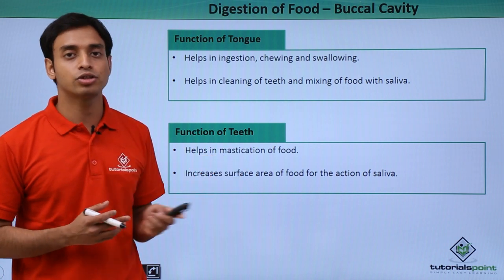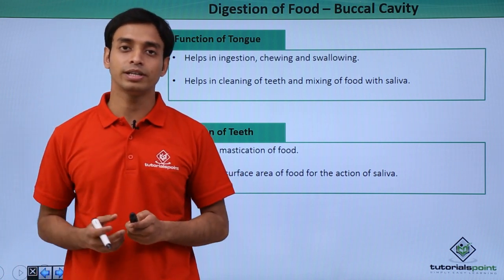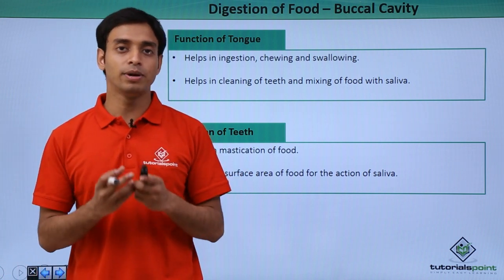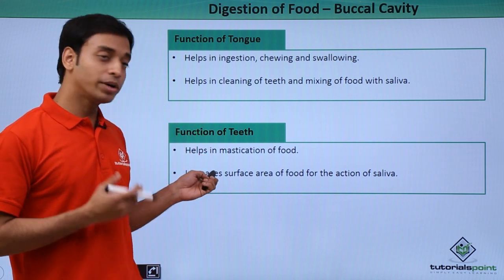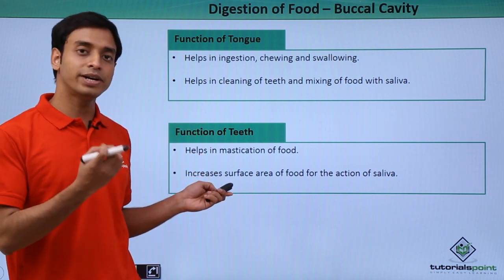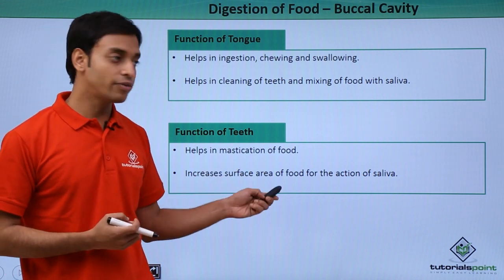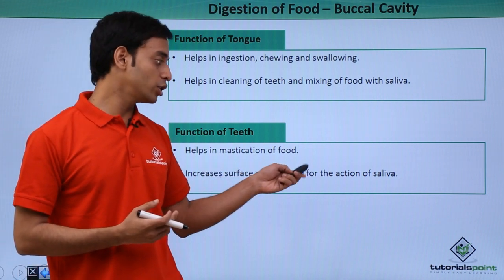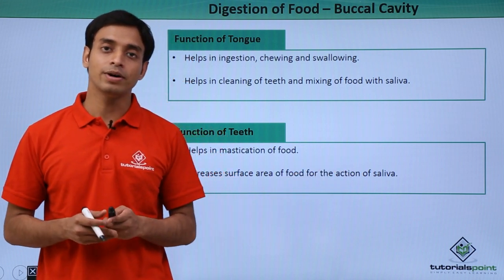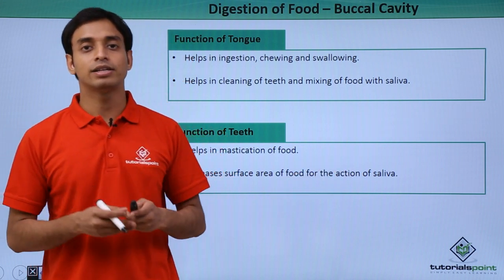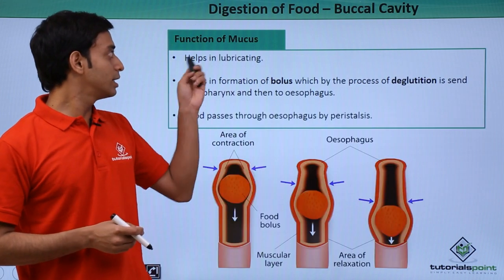Now let us talk about the function of the teeth. Teeth help in mastication of food — that means breaking down complex food materials into simpler, easily digestible ones. This mastication process breaks food into smaller pieces, which increases the surface area for the action of saliva and its digestive juices.